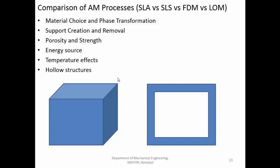For porosity and strength: in SLA, strength is on the moderate side due to the choice of materials. By performing UV curing or low-temperature post-processing, strength can be slightly improved. In SLS, since a wide range of materials can be used — including metals — very high strength is achievable. However, components produced directly will not have the required strength; post-processing such as sintering is needed to reduce porosity and increase strength.